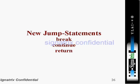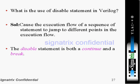Break, continue, and return are all jump statements, also available in C. Now what is the use of the 'disable' statement in Verilog? The 'disable' keyword causes the execution flow of a sequence of statements to jump to different points in the execution flow. For example, if you want to exit from a function without passing through all the statements, you use 'disable'.